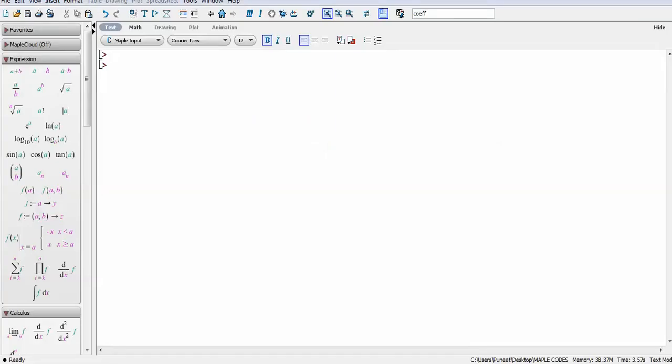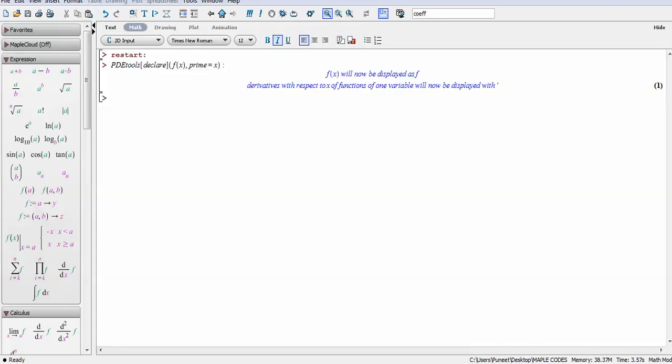We can directly go to MAPLE. First we can use the restart command. Obviously restart command is important. Next we can use the PDTools. You can use declare, so f(x) prime is equal to x. You can see that here now f(x) is displayed as f and derivatives as prime. Number of terms you can take as 3, 4, 5, is up to you.